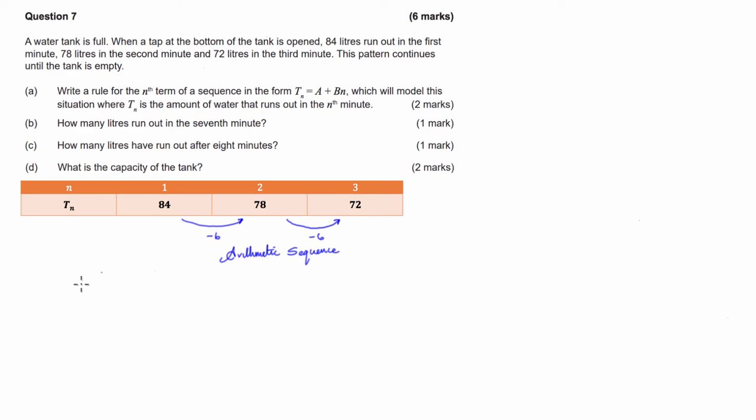Now, in part A, we're asked to write a rule for the nth term of the sequence. To write a rule, the first thing we're going to start with is the general rule for arithmetic sequences that looks something like this, where we have t_n equals a, which is our first term, plus (n - 1) times the common difference, d. We're already aware that the common difference is negative 6, and we know that our first term is 84.